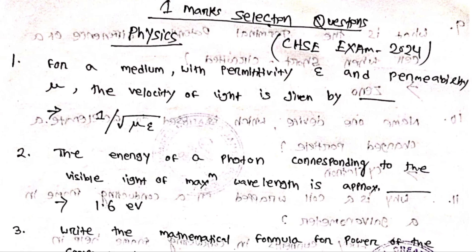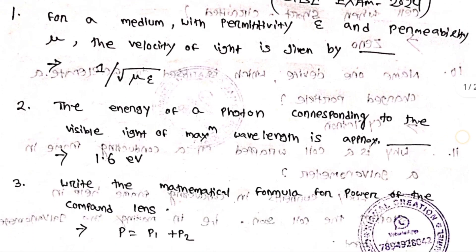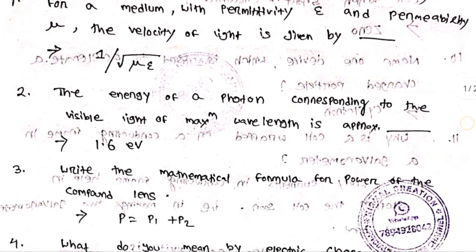For a medium with permittivity ε and permeability μ, the velocity of light is given by: 1 divided by the square root of μ·ε. This is an important physics question — share it in the video.